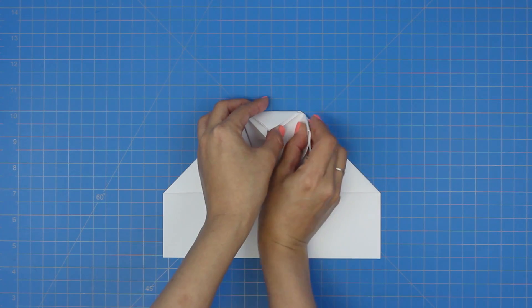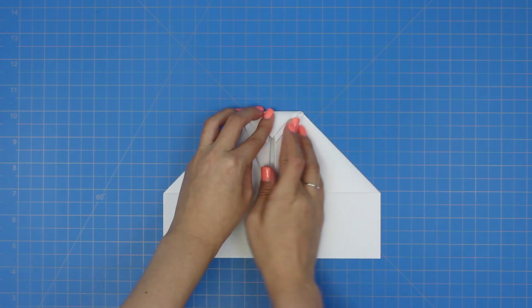Now fold the top peak down and slide these two edges into the openings on the top peak.